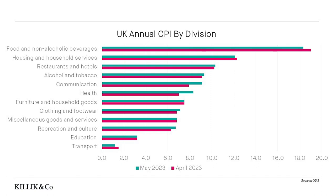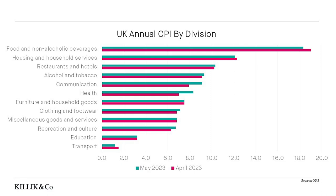Here you can see that food is still at the top of the list, with annual inflation of over 18%. The green bars show the annual data that was published in May, and the pink bars show the annual data from April. The good news is that there has been a small decline in food price inflation since then.